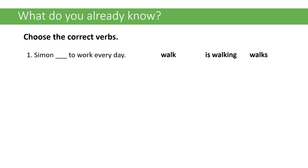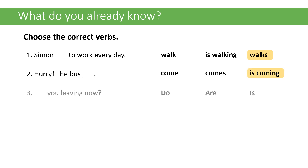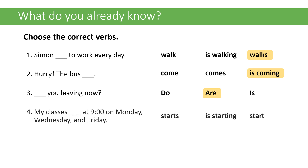Let's talk first about what you already know. We want to choose the correct verbs. For number one, should it be 'Simon walk,' 'is walking,' or 'walks to work every day'? The answer is walks. 'Hurry, the bus' — should it be 'come,' 'comes,' or 'is coming'? It should be 'is coming.' Should it be 'do,' 'are,' or 'is you leaving now'? It should be 'are.' And should it be 'my class is starts,' 'is starting,' or 'start at 9 on Monday, Wednesday, and Friday'? It should be 'start.'